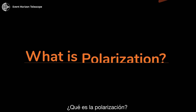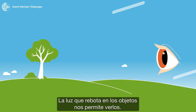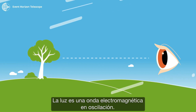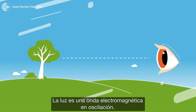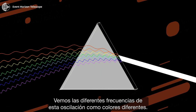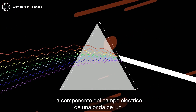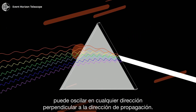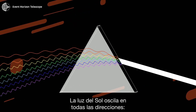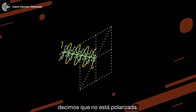What is polarization? Light bouncing off objects allows us to see them. Light is an oscillating electromagnetic wave. We see different frequencies of that oscillation as different colors. The electric field component of a light wave can oscillate in any direction perpendicular to the direction of travel. Light from the sun oscillates in all directions — we say it is unpolarized.